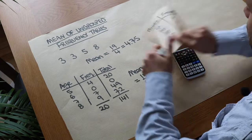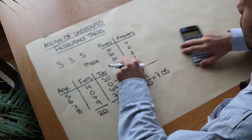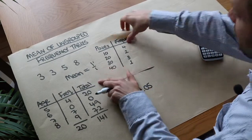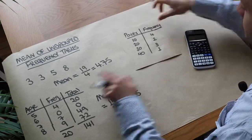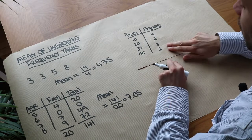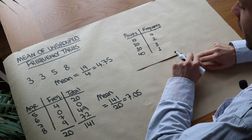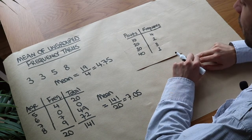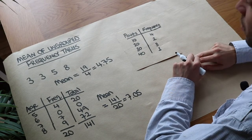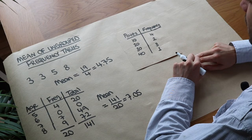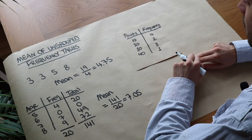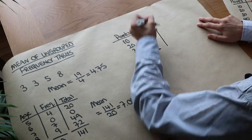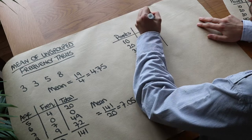Now I'm going to give you a question to do. We've got different numbers of points and the number of people who scored each number of points. I want you to work out the mean number of points. You may want to pause the video here to have a go at that. As before, we can add a total row.